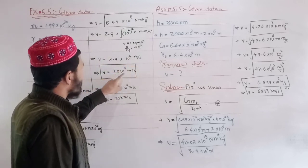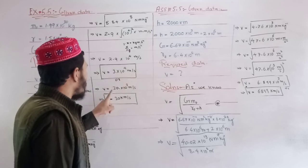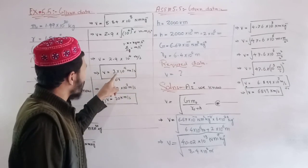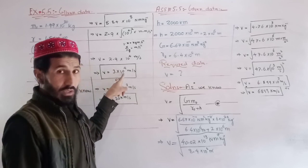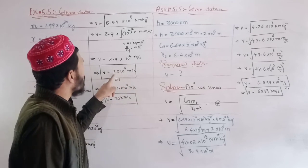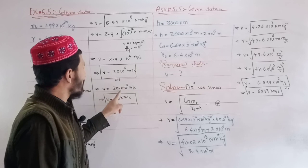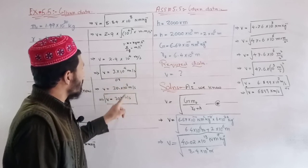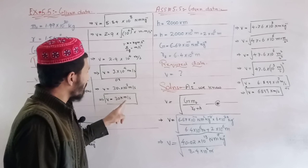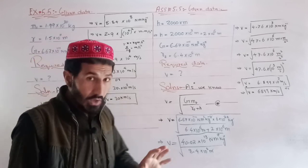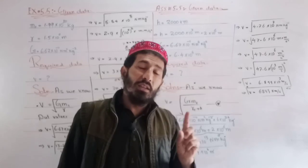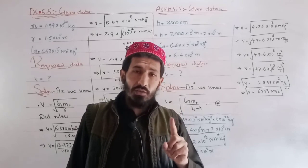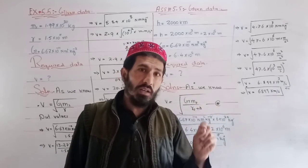The result is 30.0 × 10^3 meters per second, or 30 kilometers per second. This means that the Earth travels at 30 km/s around the Sun.